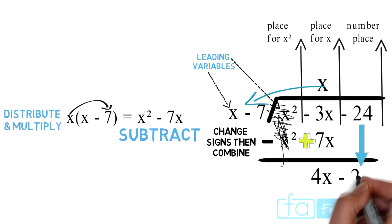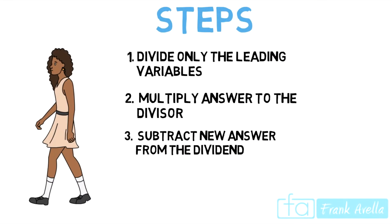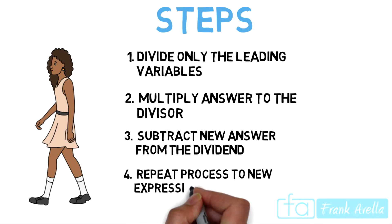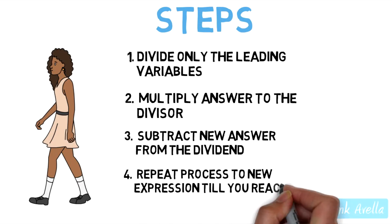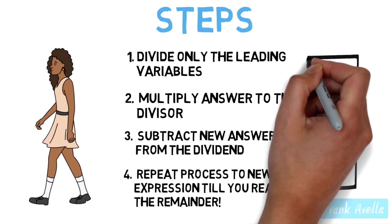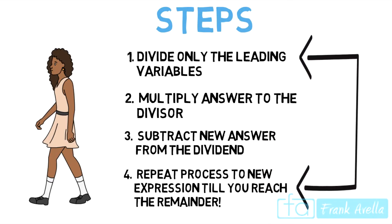We write in negative 24 and move on to Step 4, our last step, which states: repeat the process with the new expression until you reach the remainder. So we're going to repeat this process all over again, starting back at Step 1.